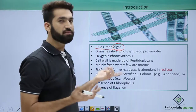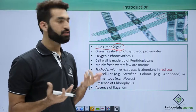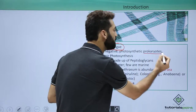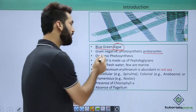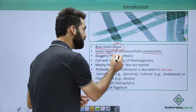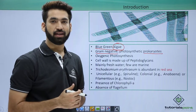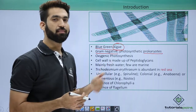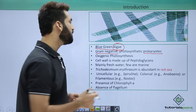When you talk about kingdom monera, they have to be prokaryotes. So cyanobacteria are basically prokaryotes. They are gram-negative — I've already told you about gram staining, and cyanobacteria belong to the group of gram-negative bacteria.